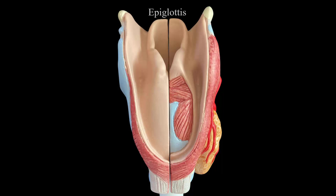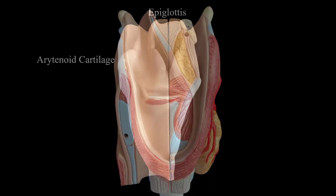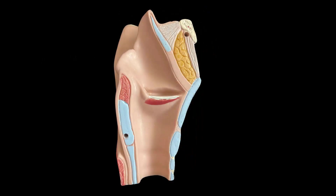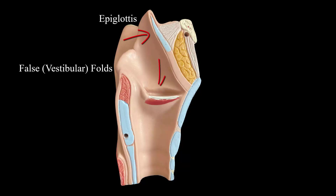From a posterior view, we have the epiglottis and the arytenoid cartilage. From a mid-sagittal view, we have once again the epiglottis, the false or vestibular folds, and also the true vocal folds or vocal cords.